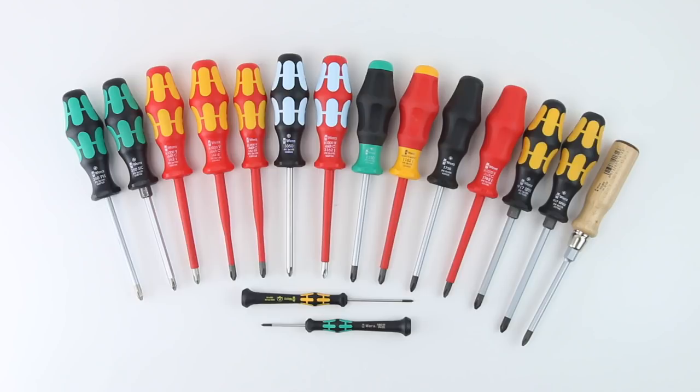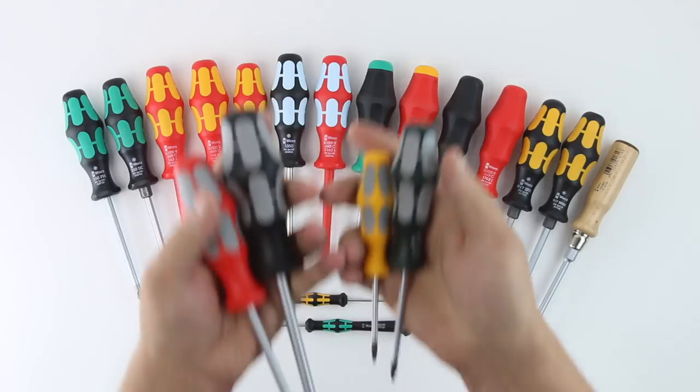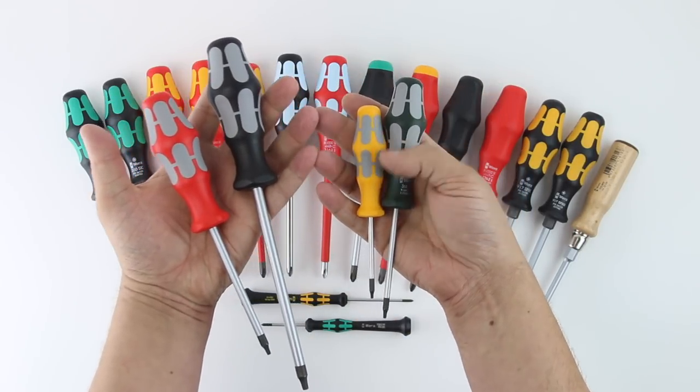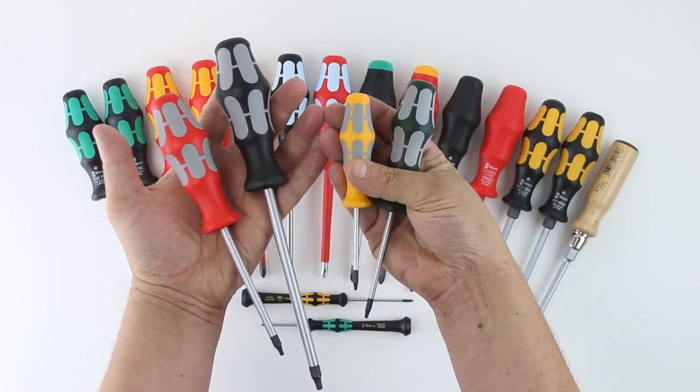All of these drivers come with the Wera limited lifetime warranty and run the gamut in terms of tips. Phillips, slotted, square, you name it. And if you really want to see it in an array of color, check out Wera's Robertson line of screwdrivers, which are color-coded by size.